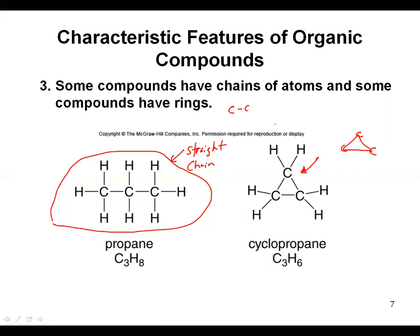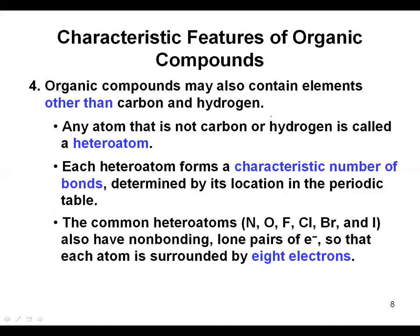Organic compounds could also be branched. What a branched chain means is you have a run of straight carbons, and every so often there's a branch that comes off with more carbons. Much like a tree — which is why they're called branches — there's a longest chain and then coming off of it, like a branch on a tree, there's another section of carbons and hydrogens.